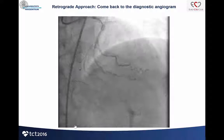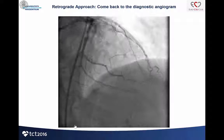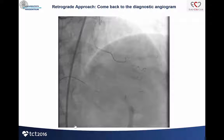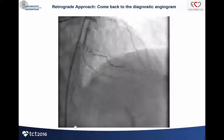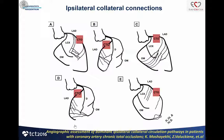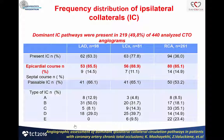We have two retrograde options in this case. One is from the diagonal to the distal LAD — it's a little tortuous. There are also retrograde options from the diagonal to the distal landing zone, which were rather useful. These are the ipsilateral connections — a type B connection from the diagonal to the LAD. Regarding the frequency of ipsilateral collateral connections, we analyzed this in 440 CTOs and about 50% had ipsilateral collaterals. The main message is that in these collaterals, we almost always deal with epicardial courses.